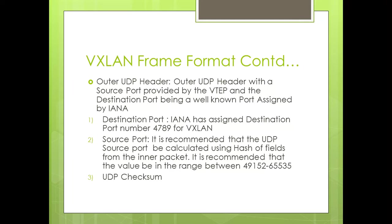The outer UDP header contains a destination port and a source port. IANA has assigned destination port number 4789 for VXLAN. The source port is calculated using a hash of fields from the inner packet — it will use the inner L3 header, inner L2 header, or both. The source port range is 49152 to 65535, and this source port is used by core routers for hashing purposes.